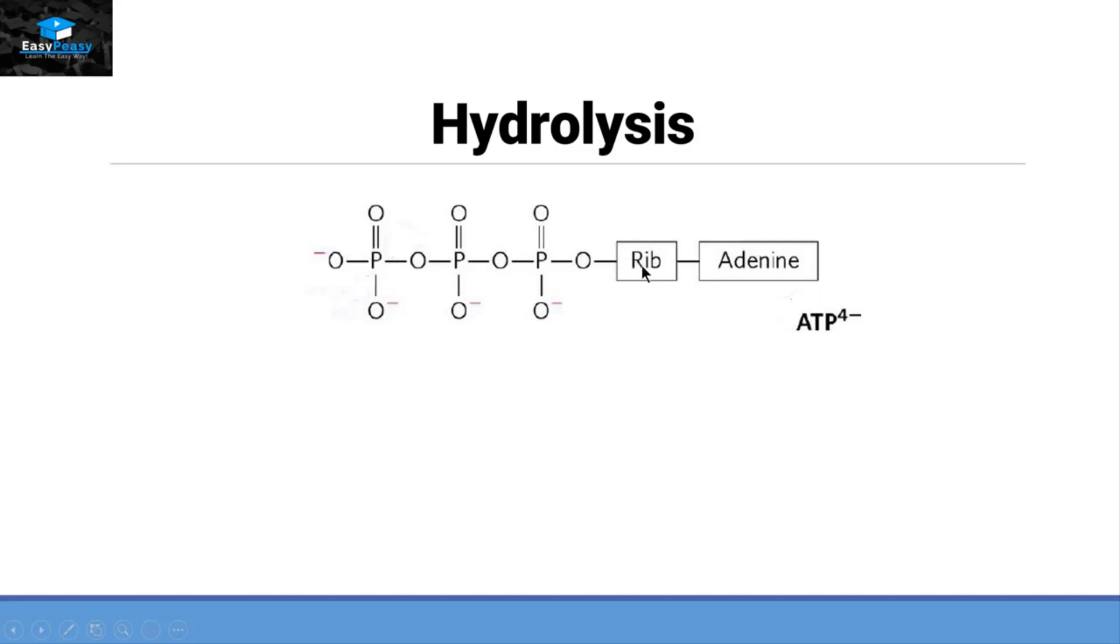This ATP has a ribose sugar attached to an adenine nitrogenous base and three phosphate groups, which is why it is called ATP. The negative 4 is the charge present on each oxygen, so we can see there are four negative charges, which is why ATP^4- is represented here.